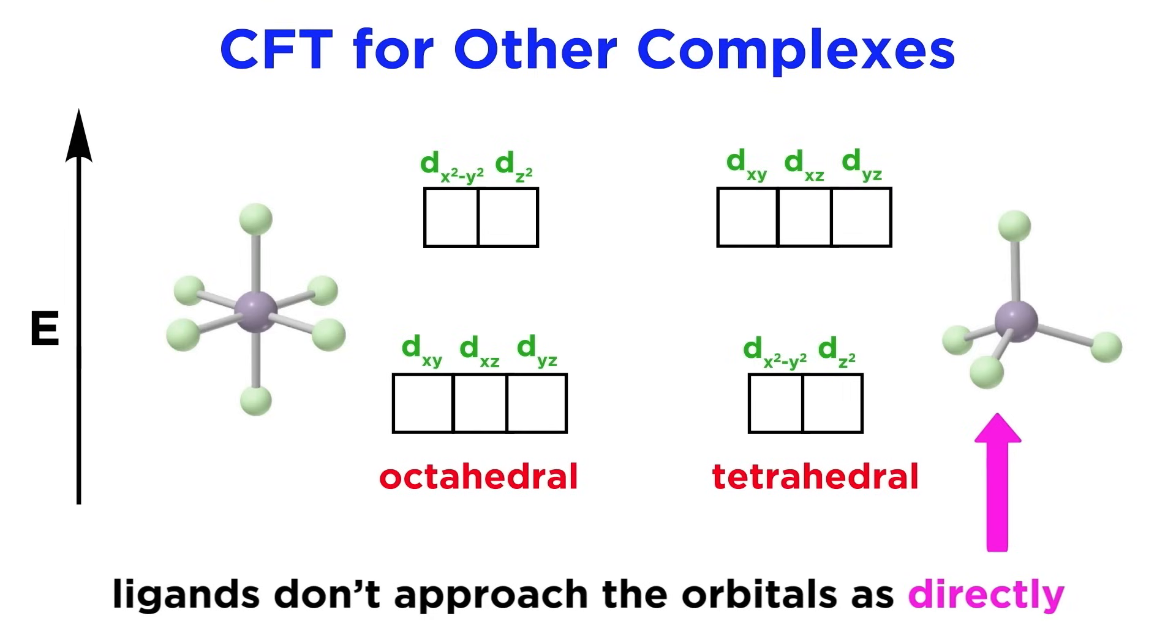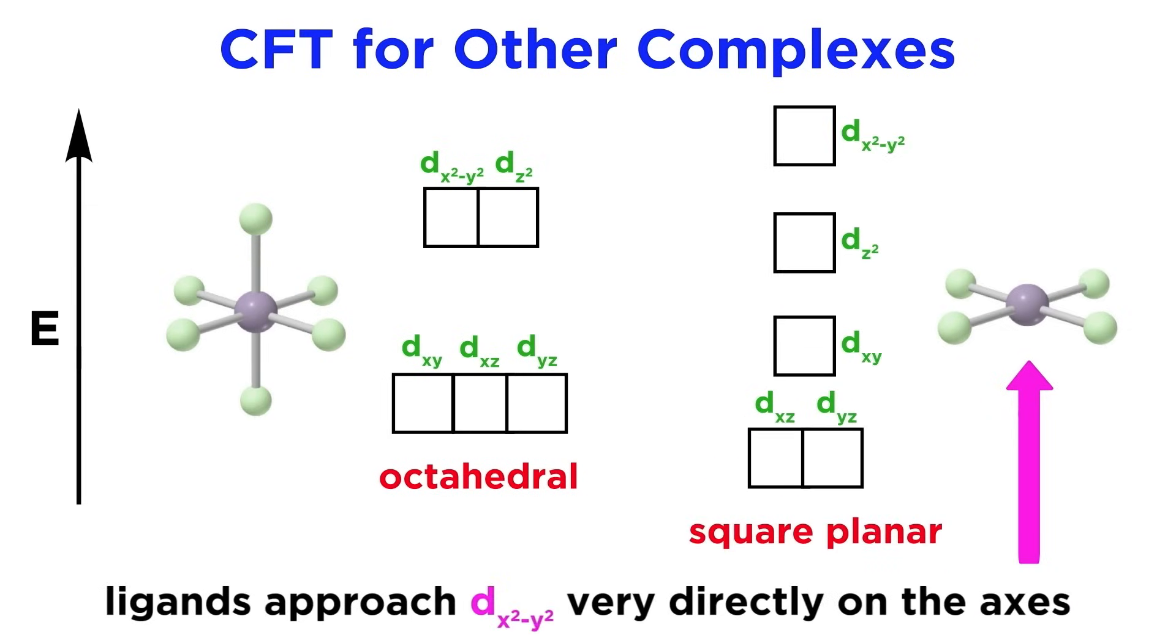Also, the ligands don't approach the orbitals as directly, so the energy splitting will be of a lesser magnitude. We can do something similar for square planar geometry as well.